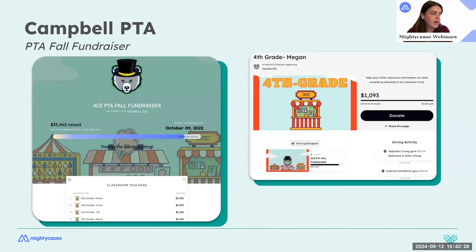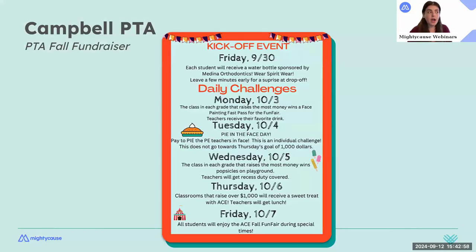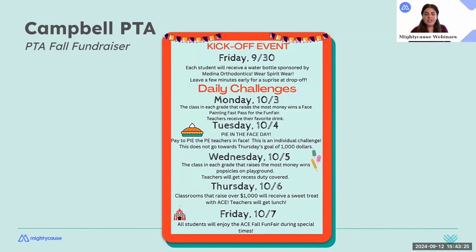This is a PTA fundraising campaign that used an event fundraising page where each teacher has their own fundraising page. Students, family, and friends could donate to the class or teacher they wanted to support. They encouraged giving through a contest with incentivized tiers: the class in each grade that raised the most wins a face painting fast pass for a fun fair; the class that raises the most money wins popsicles on the playground; and a classroom that raised a thousand dollars receives a sweet treat. These incentives encouraged students and parents to share their fundraising page so their class could win.